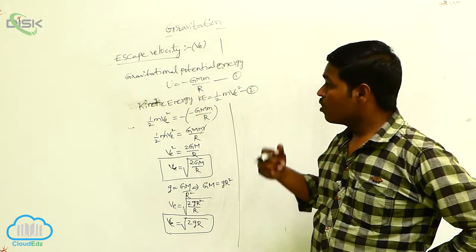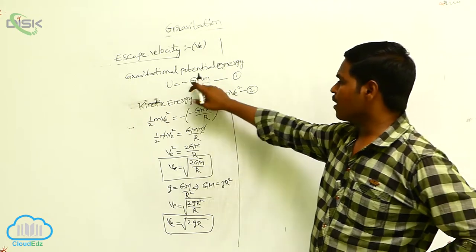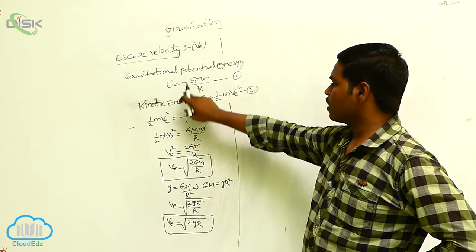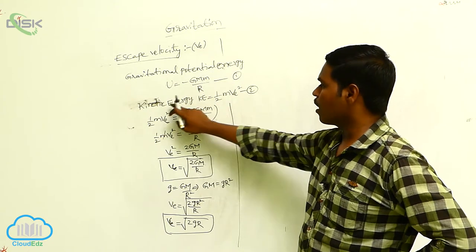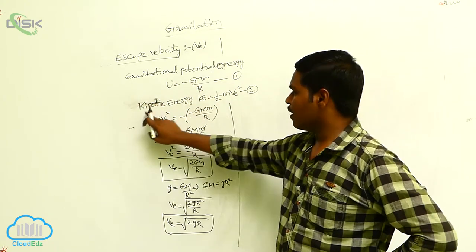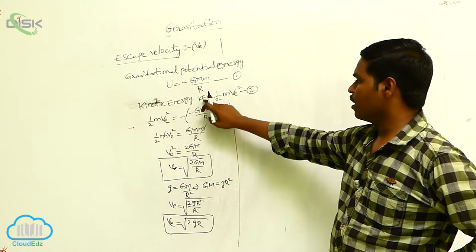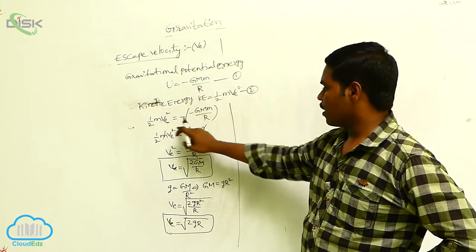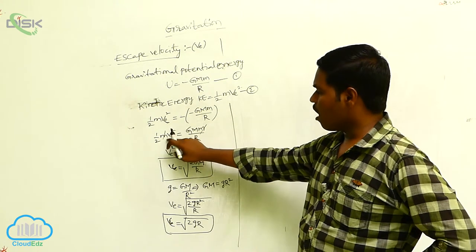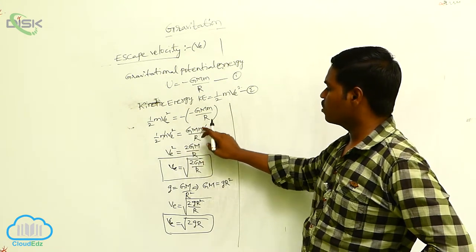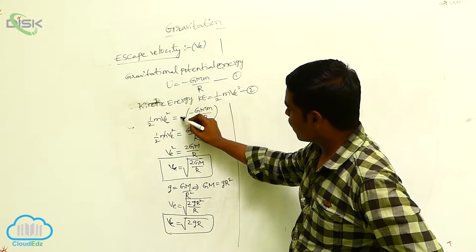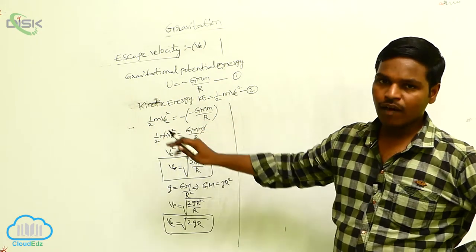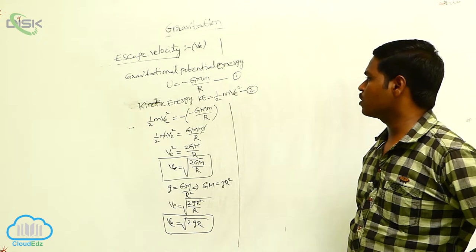To escape from the Earth's surface, the object needs to overcome gravitational potential energy of magnitude GM·m by R, and it has kinetic energy half·m·Ve². These two energies are equated — the minus sign denotes that they are equal and acting in the opposite direction.